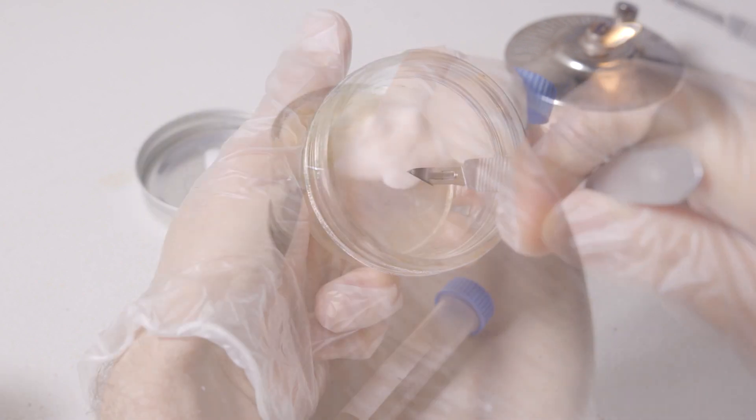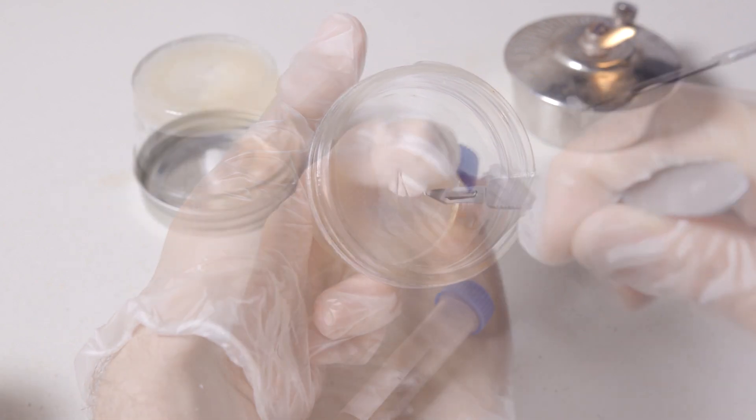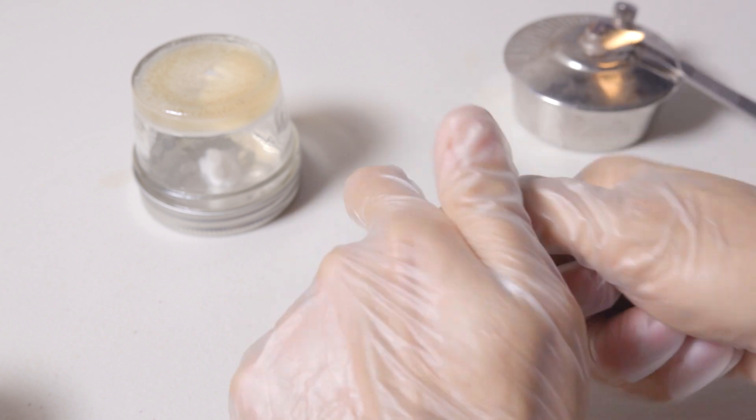Now that we've finished putting all of our cultures into slants, the last thing I like to do is take a piece of parafilm and then wrap up our tubes so that way they can stay airtight during storage.